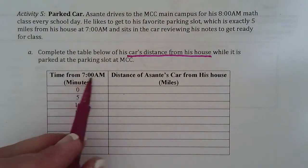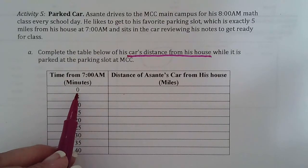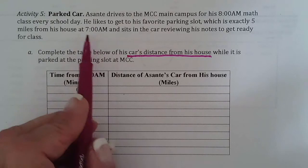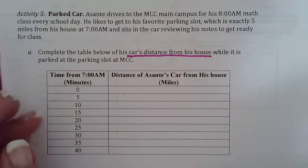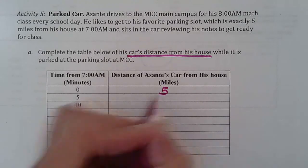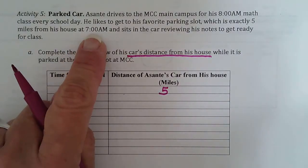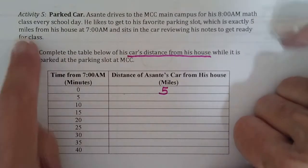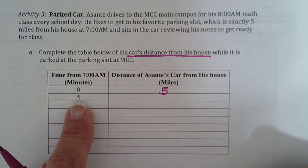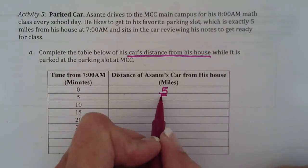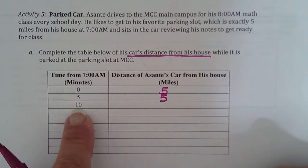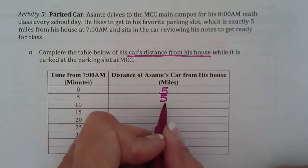So time from 7 a.m., so this means zero minutes after 7 a.m., otherwise 7 a.m. So at 7 a.m., how far is he away from his house? 5 miles, right? Because it says he parks in his favorite spot at 7 a.m., and it's 5 miles from home. Okay, at 7 a.m., he's sitting in his car, how far is he away from his house? 5 miles. At 7 a.m., he's still sitting in his car reviewing his notes. How far is he from his house? 5 miles.